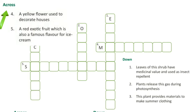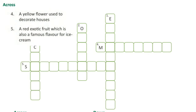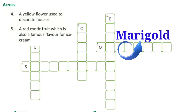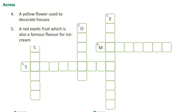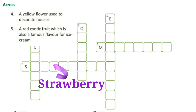Next, four across: a yellow flower used to decorate houses. The answer is marigold. Next, a red exotic fruit which is also a famous flavor for ice cream. The answer is strawberry.